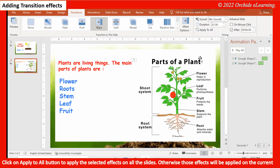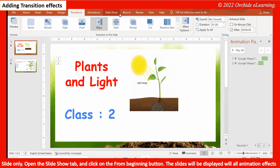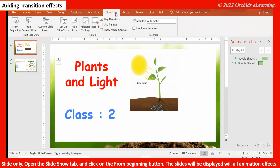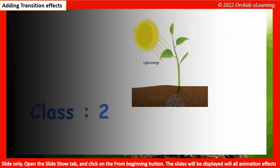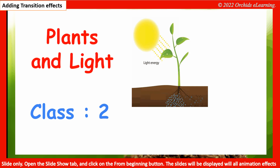Otherwise, those effects will be applied to the current slide only. Open the Slide Show tab and click on the From Beginning button. The slides will be displayed with all animation effects.